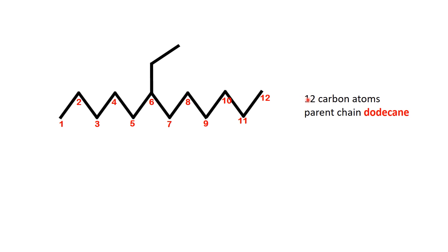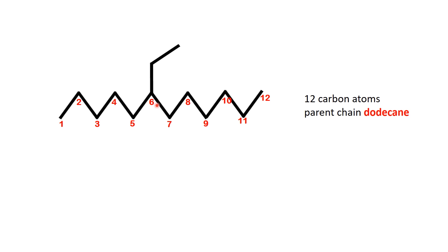Next, we need to number the chain to ensure that the substituent receives the lowest possible number. Starting from this end of the chain, the substituent is located on the 6th carbon. If we were to number from the opposite direction, it would fall on the 7th carbon, which gives a higher number. To follow the naming rules, we number it from the end that places the substituent at position 6. Since the substituent at this point is a simple ethyl group, the name of the compound is 6-ethyldodecane.